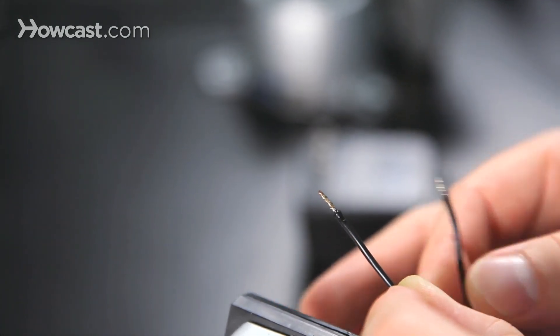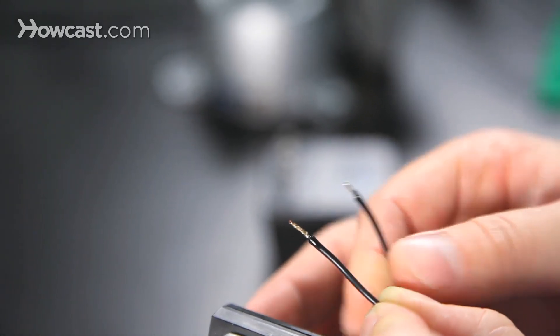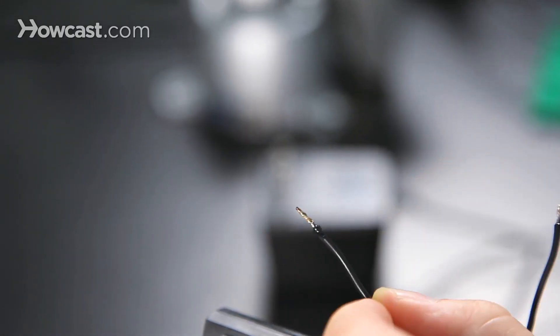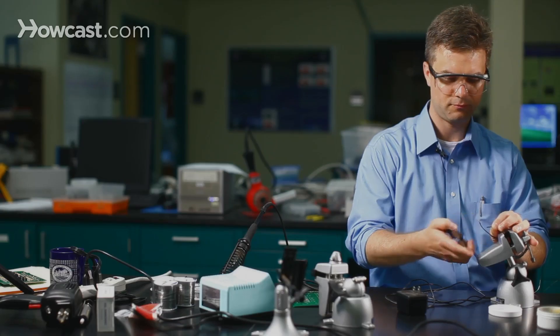So in order to make a better solder joint, we need to remove that oxide layer. What we'll do is cut a new piece of wire, strip, and use our sandpaper.